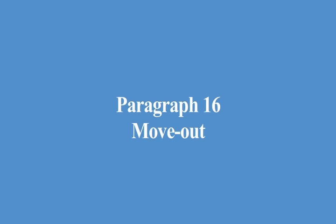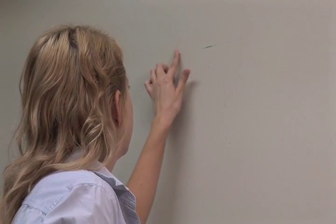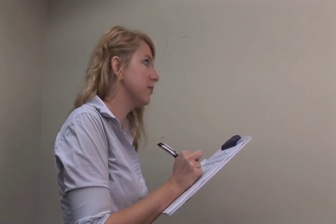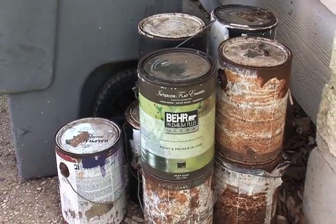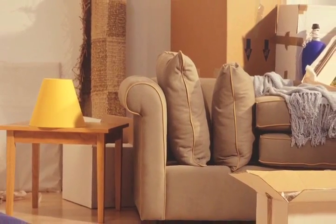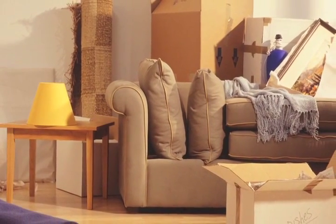Paragraph 16, Move-Out. This paragraph requires the tenant to surrender the property in the same condition as when the tenant moved in, with the exception of normal wear and tear. The tenant must leave the property in a clean condition, free of all trash, debris, and any personal property. The tenant may not abandon the property. This paragraph also defines the terms normal wear and tear, surrender, and abandonment. In the event that the tenant leaves behind personal property, the landlord may dispose of, give away, or store and sell the personal property. In addition, the tenant is obligated to reimburse the landlord for all reasonable costs for packing, removing, storing, and selling the personal property left in the property.